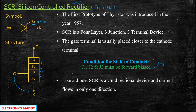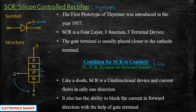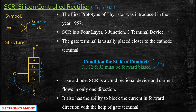Comparing SCR with a normal diode: just like a diode, SCR is also a unidirectional device — it only allows current to flow in one direction, from anode to cathode in conventional terms. In addition to this, SCR has one more property where it will be able to block the current in the forward direction as well, with the help of the gate terminal. That is why this device is used in applications where control is required.